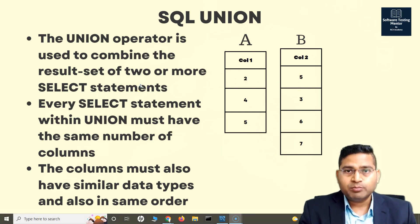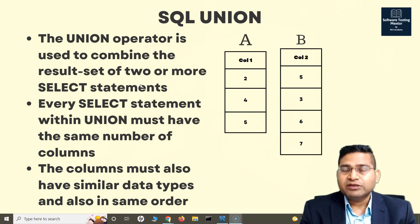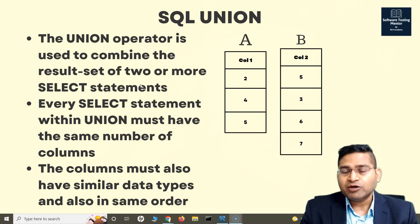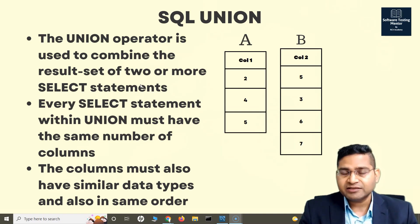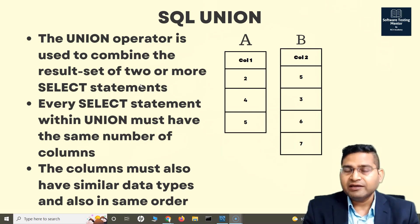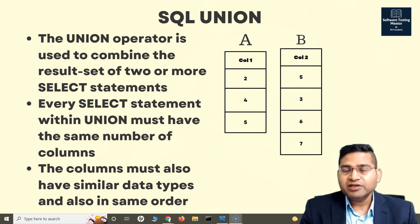If I want to do a UNION on tables where the columns don't match, the UNION operator will fail. The same thing is true if the columns are the same but the data types are different. Say for example, you want to do a union of a table which contains first name and last name with a table which contains order ID and amount. So even though both tables have the same number of columns, first name and last name is VARCHAR, but order amount and order ID will be integer or float values. Since the data types are different, the union can't be done.